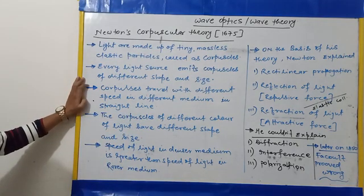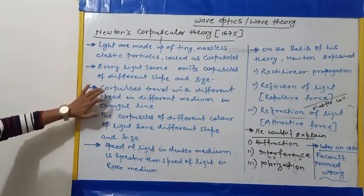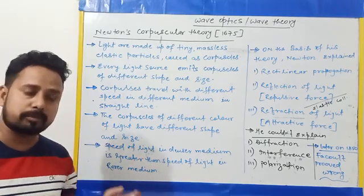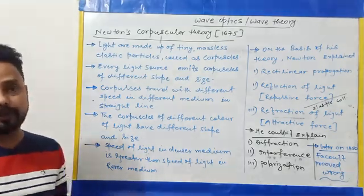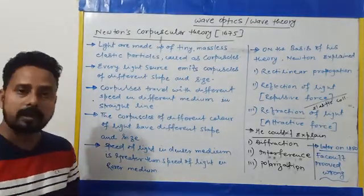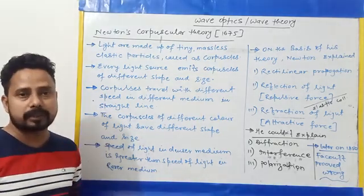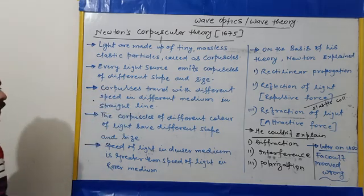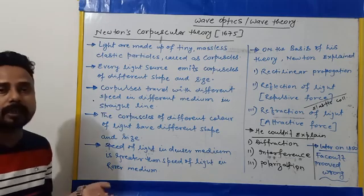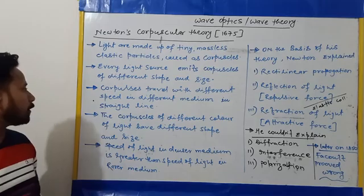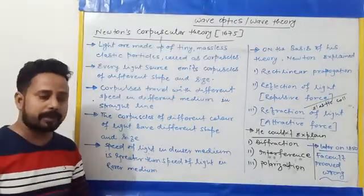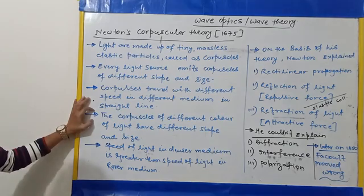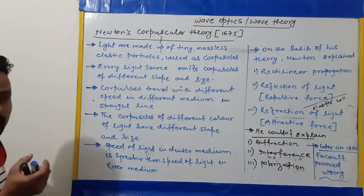Corpuscles travel at different speeds in different media in a straight line, meaning light follows rectilinear propagation. You know the speed of light depends on the medium — the highest speed is in vacuum or air, which is 3×10⁸ m/s. Also, corpuscles of different colors of light have different shapes and sizes.